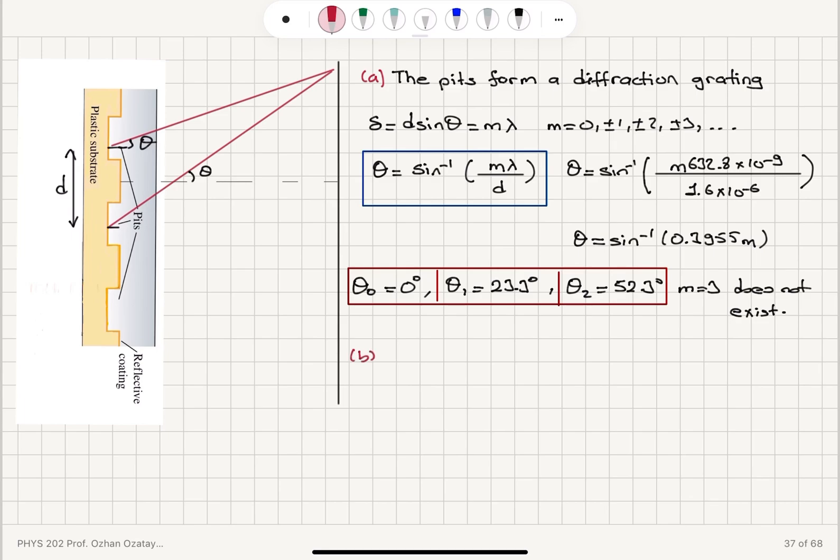Now, part B asks us to repeat the calculation for a DVD. So theta is now sin inverse M lambda, M times 632.8, 10 to the minus 9 meters, divided by D.